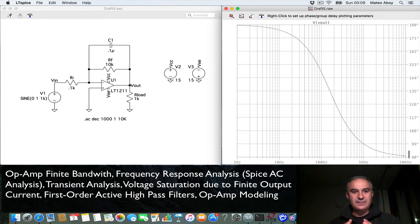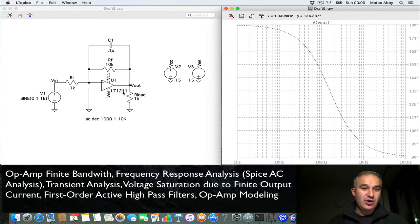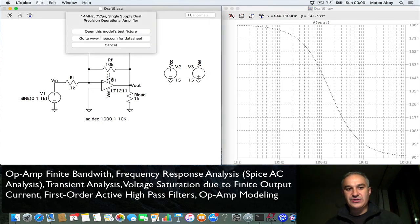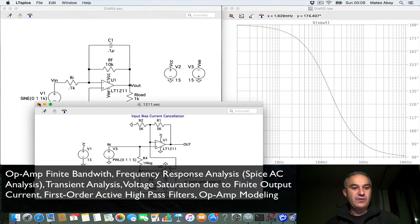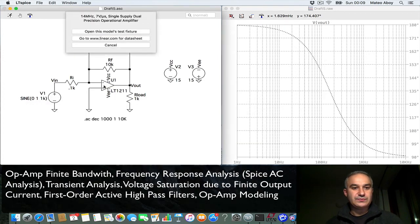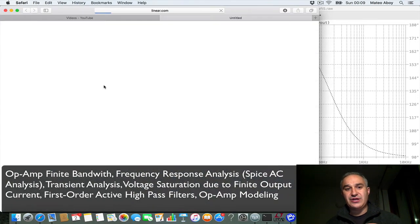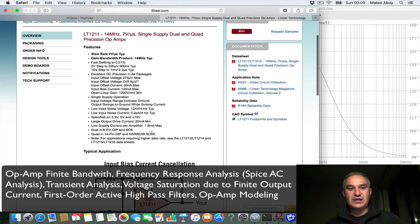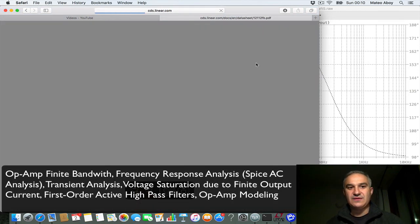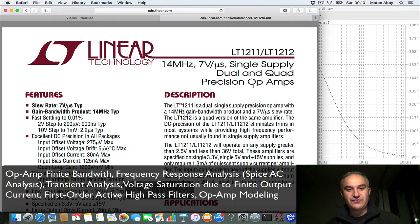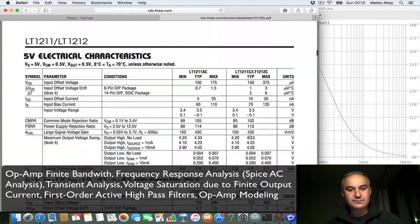So let's recap a little bit. We have seen how to do simulations with a model of a real operational amplifier, the LT1211. If you right click on the operational amplifier, you can look at the test feature for the model. You can also go to the Linear data sheet. You get an overview on the website, like a slew rate, gain bandwidth product, etc., as well as you can get the full data sheet for the operational amplifier.